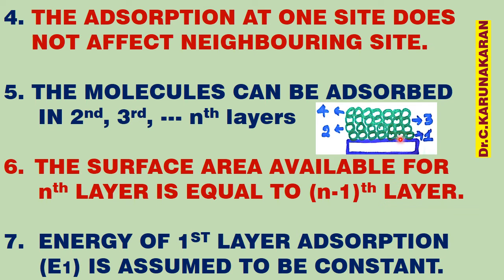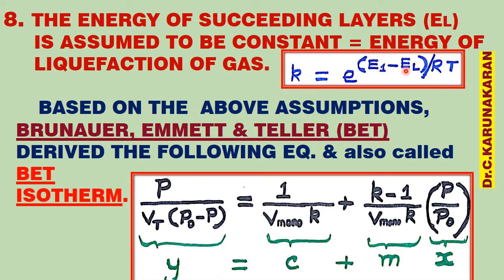The heat of adsorption, or energy of adsorption, in the first layer is called E1, and is assumed to be constant. The energy of adsorption in the succeeding layers — second layer, third layer, and so on — is also assumed to be constant, called EL, where EL is the energy of liquefaction of the gas, that is, the heat released when one mole of gas is converted into liquid.